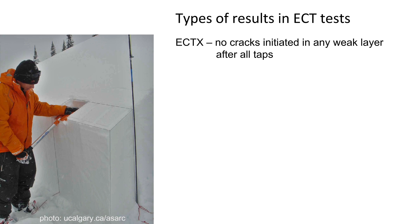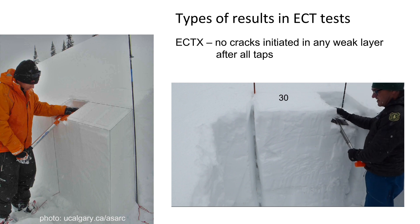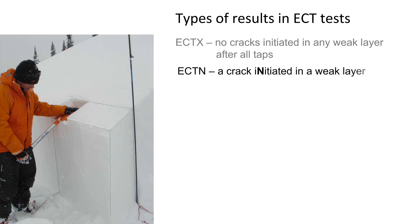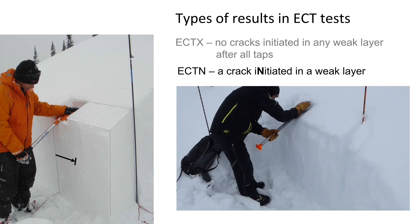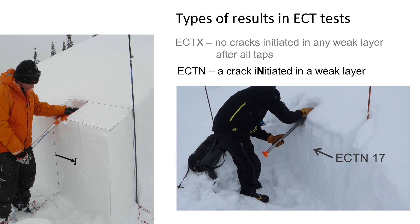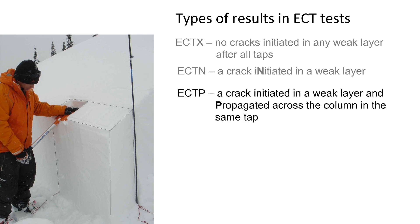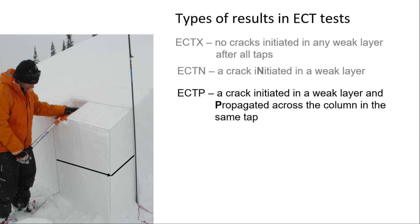When doing an extended column test, there are three types of results. ECTX means you did all of the tapping and no cracks initiated in any weak layer. ECTN means a crack initiated or started in a weak layer but did not propagate across the column. The third type of result is an ECTP, when a crack initiates in a weak layer and propagates quickly across the column as a result of the same tap. You saw two ECTPs at the start of the video and a longer clip of Doug getting an ECTP.